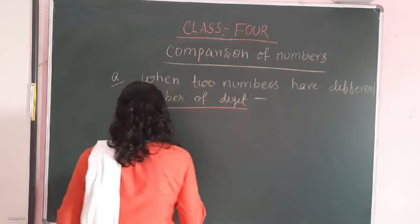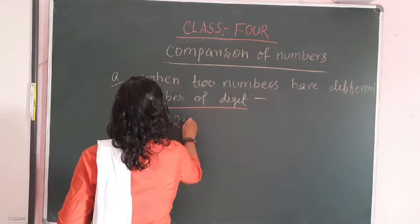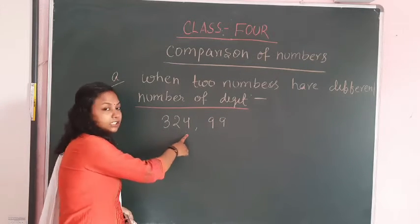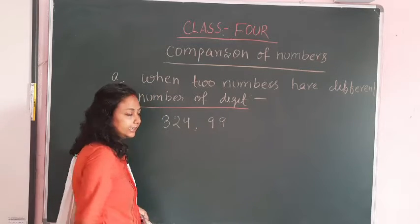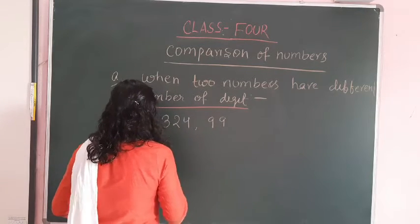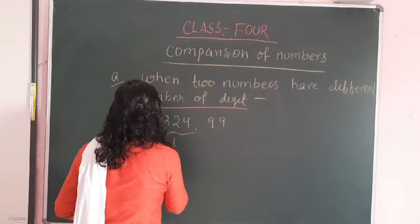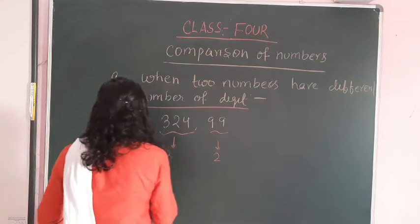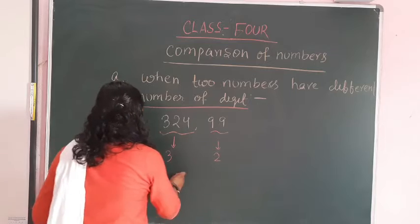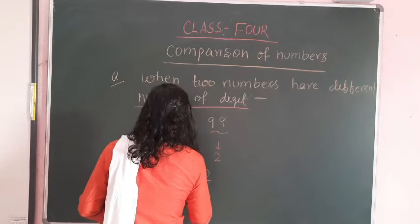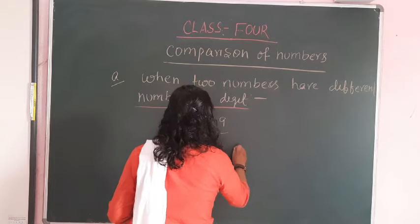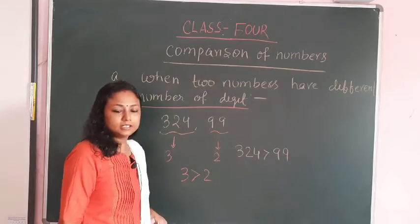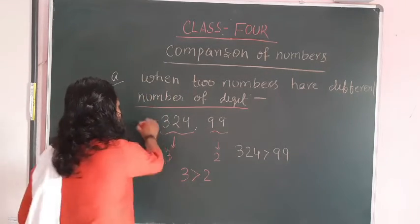Take another example: 324 and 99. 324 has three digits and 99 has two digits. Three is greater than two, so 324 is greater than 99.